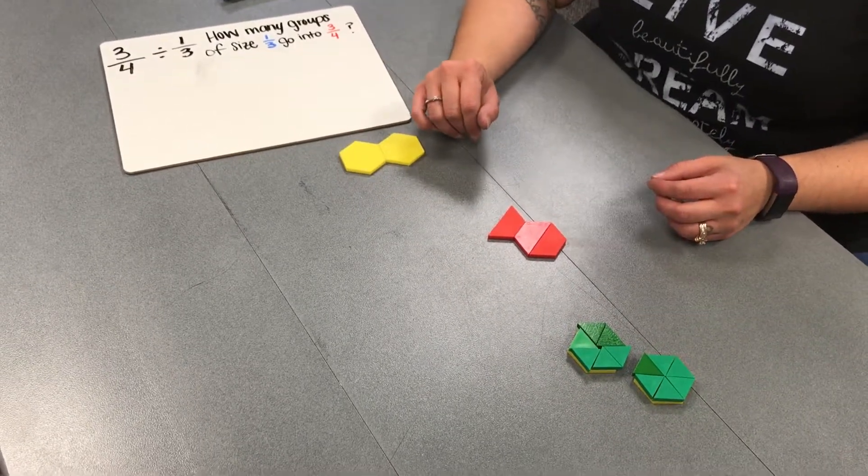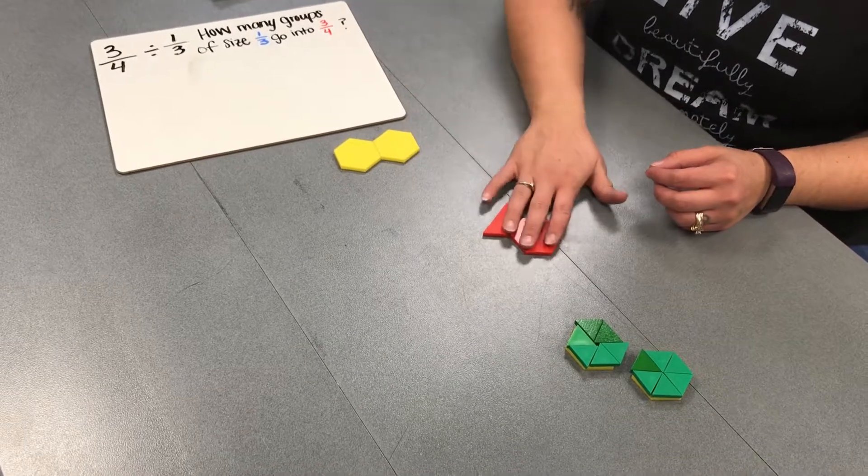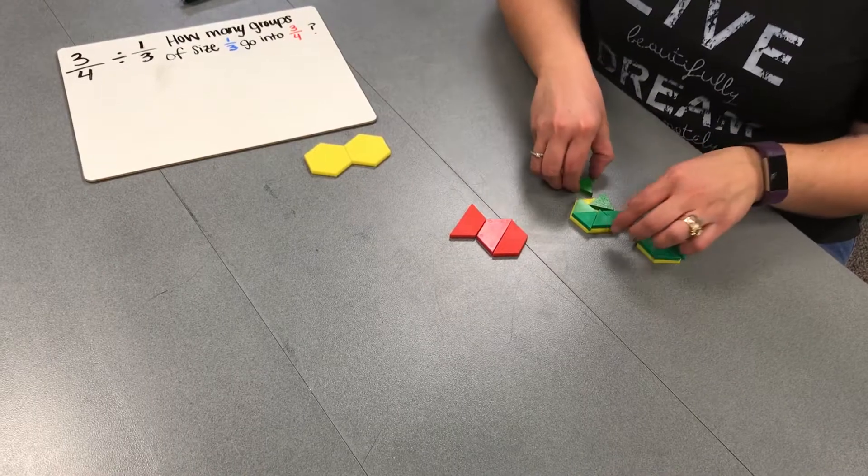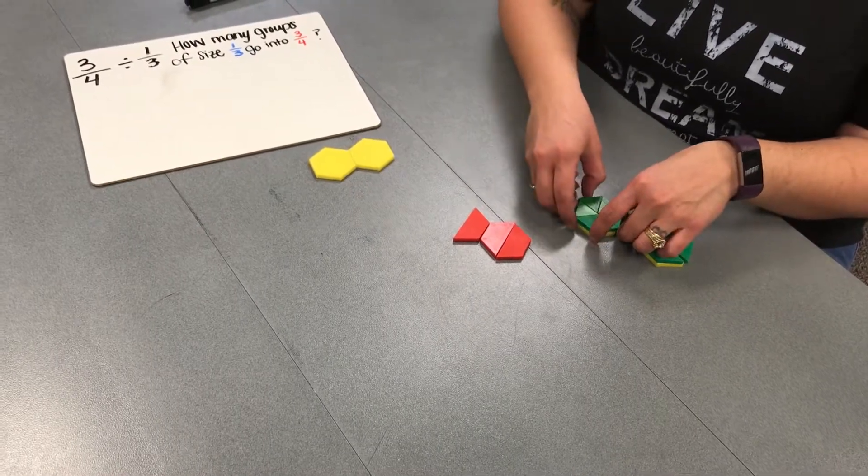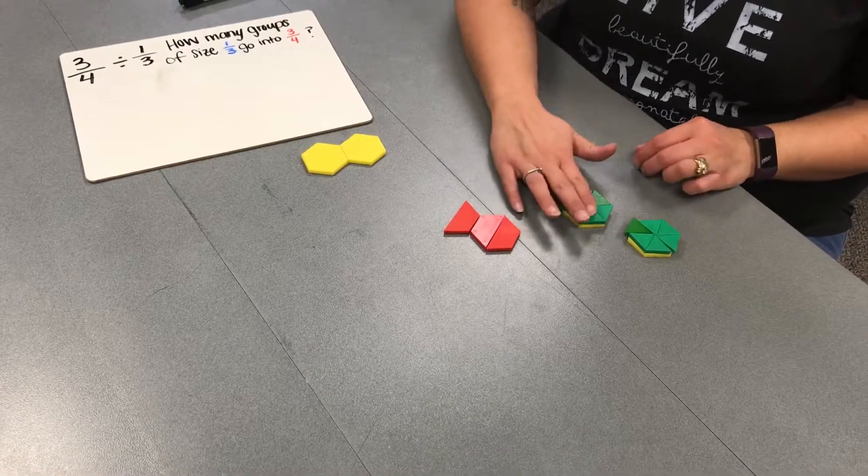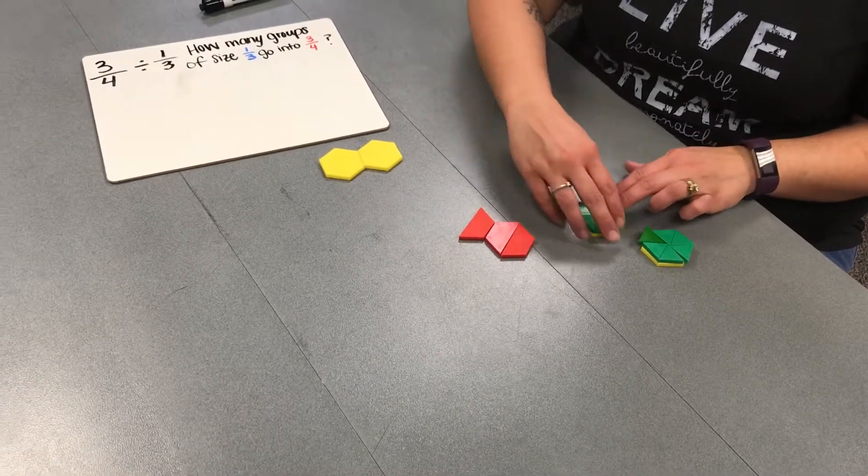Next, we need to find 1 third of our whole. So back to the triangles. 12 divided by 3 equals 4. So 4 of these triangles represents 1 third of our whole.